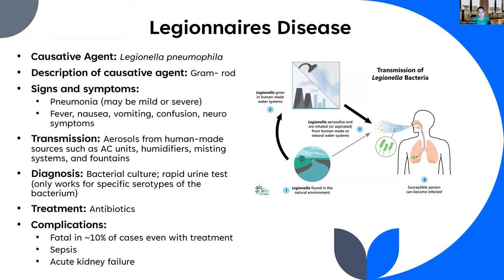When you go into bacterial sepsis, your blood pressure tanks, and you start losing blood flow to the extremities. Doctors use pressors — drugs that squeeze your capillaries to bring blood pressure up. The problem is this boosts the core but starves the periphery. Quite often people lose fingers, whole hands, feet, and toes because those become necrotic — they die, sacrificed to keep your core blood pressure up. Acute kidney failure is another complication. You may not die of Legionnaire's directly but could die of kidney failure years down the road.